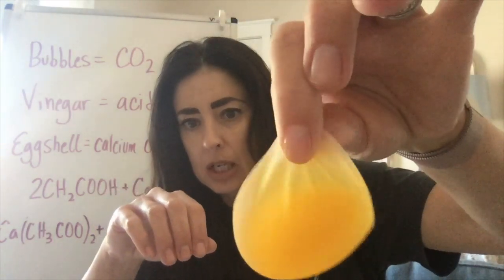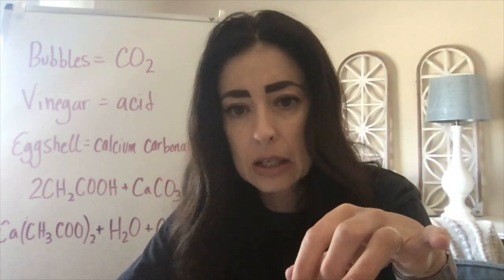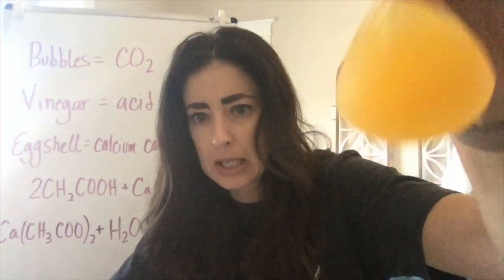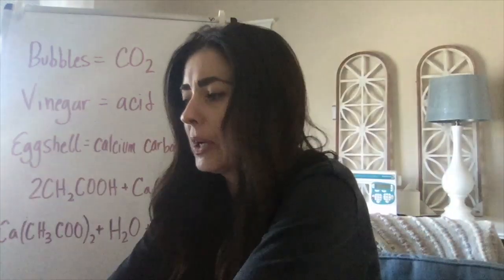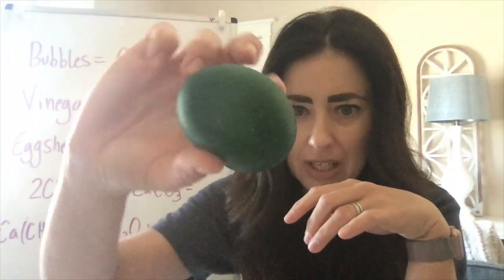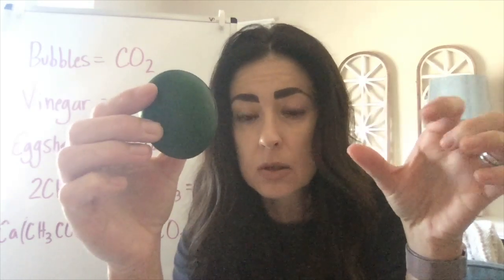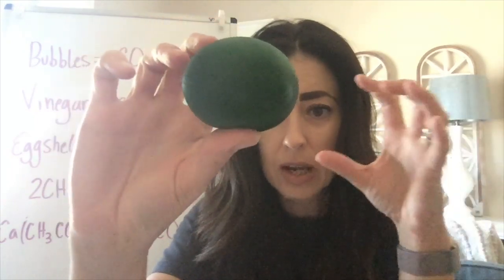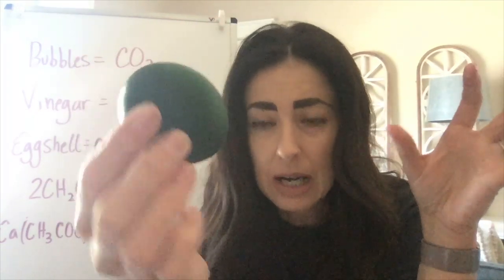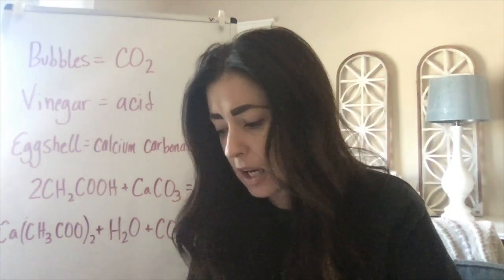Then remember I told you to color some water and put your shriveled-up egg into it? This is what happens — I colored my water green, and this is proof that the water from the outside was trying to equalize through osmosis the concentration of water on the inside versus the outside of the egg. The green actually passes through the membrane into the water inside the egg, so it actually changes color.